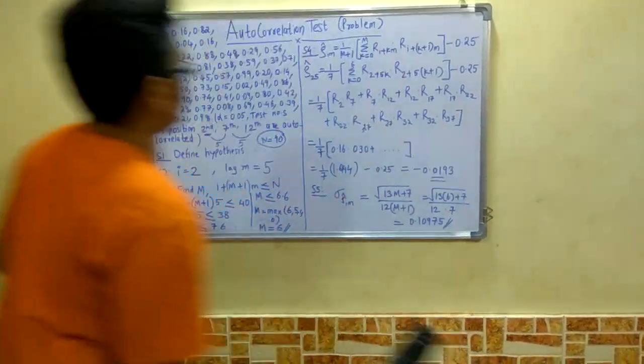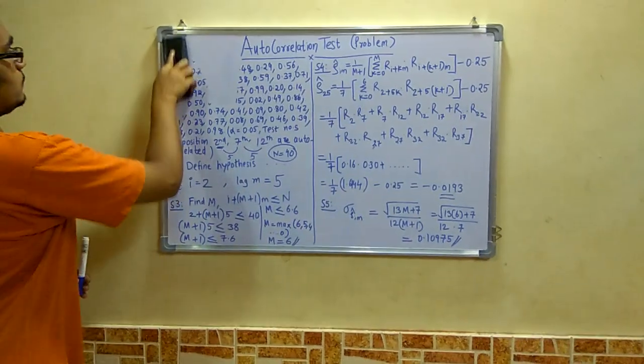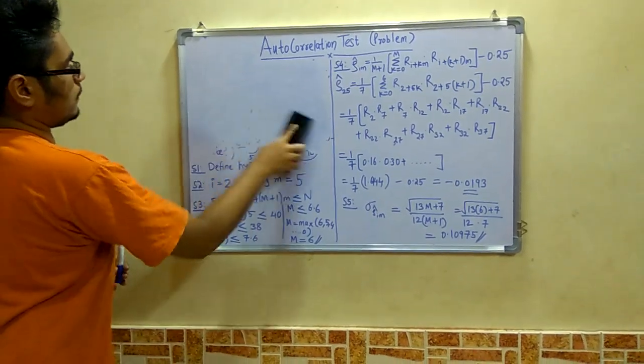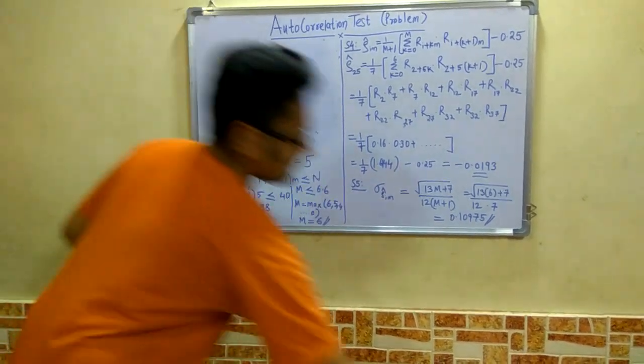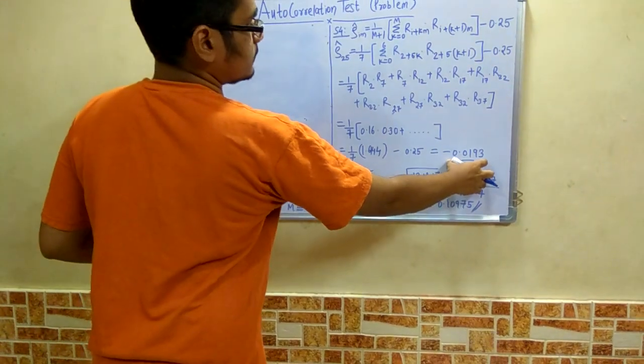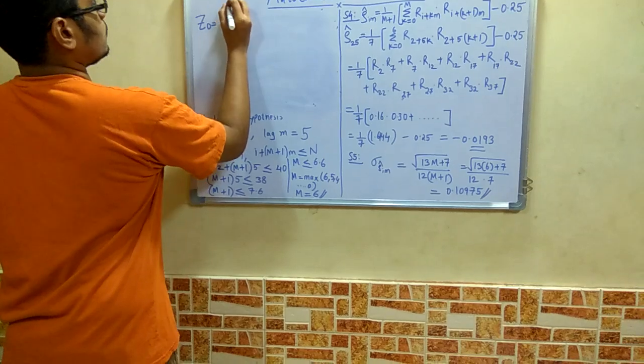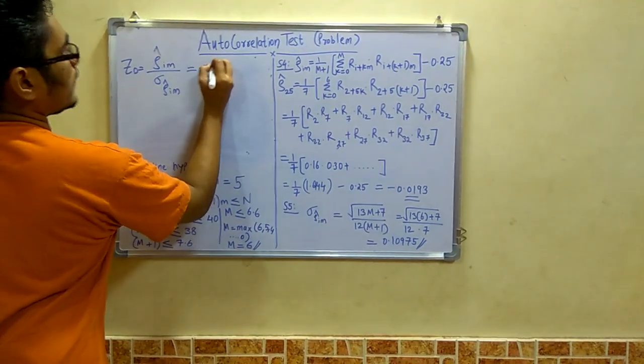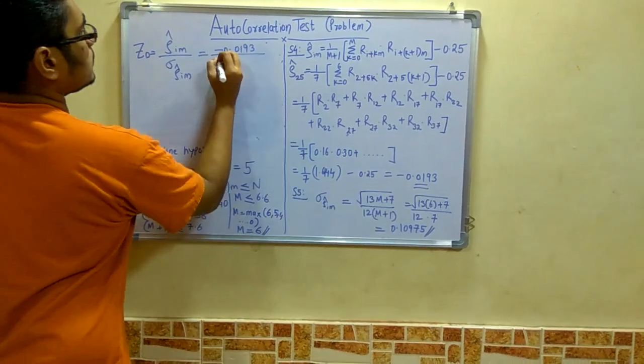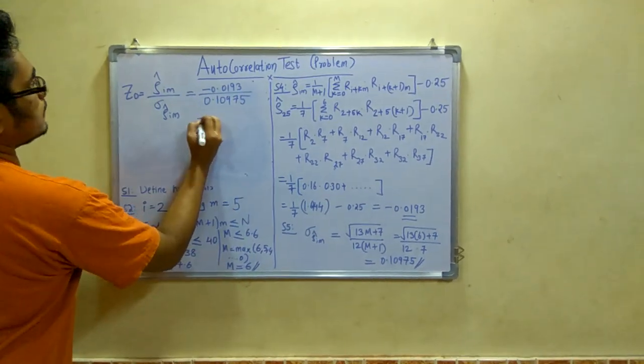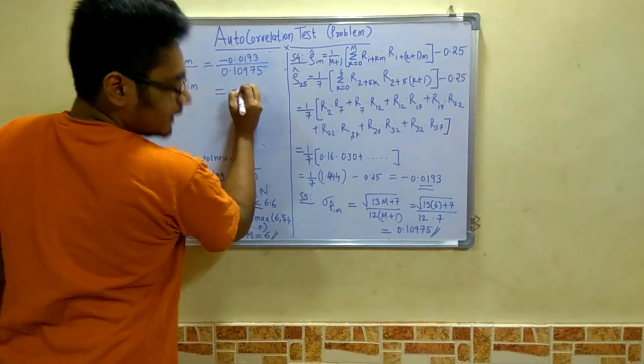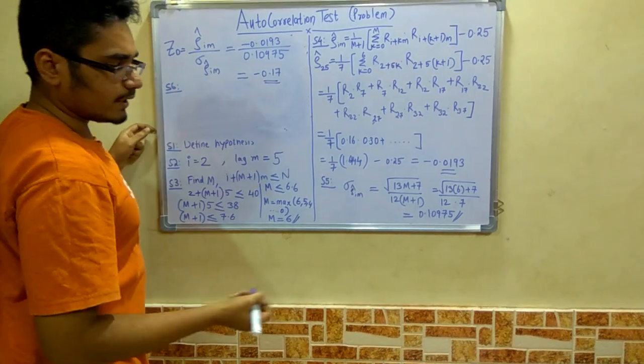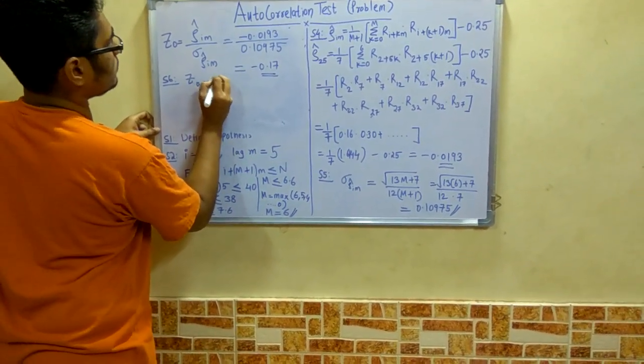After this you have to determine the test statistics. So for that we have to write the Z0. Now Z0 is the ratio of this estimator as well as this rho cap IM of the standard deviation. So that is written in this way. That is Z0 is equal to you have to divide this value with this value. That is rho cap IM divided by standard deviation of rho cap IM. That is minus 0.0193 divided by 0.10975. This value comes out to be minus 0.17. Now after this you have to determine the value of Z alpha by 2. That is Z0.025 is equal to 1.96.